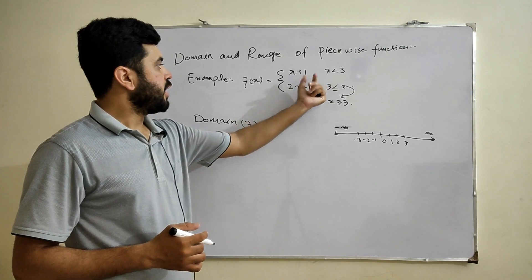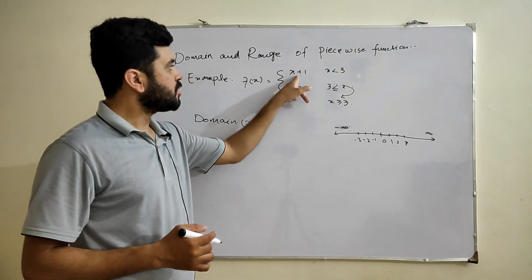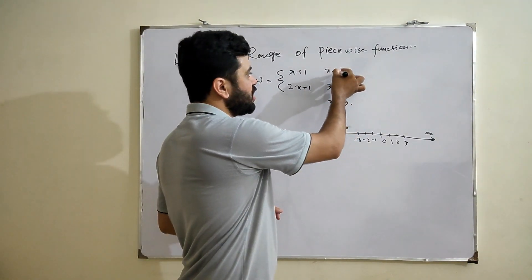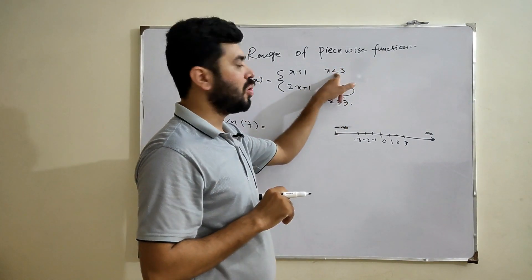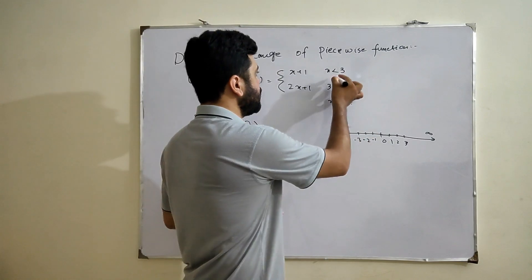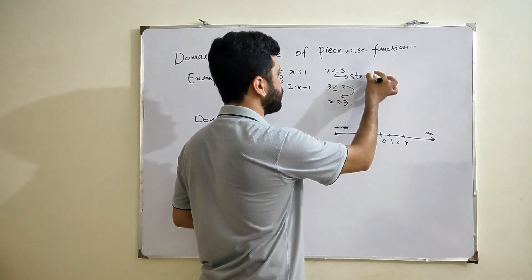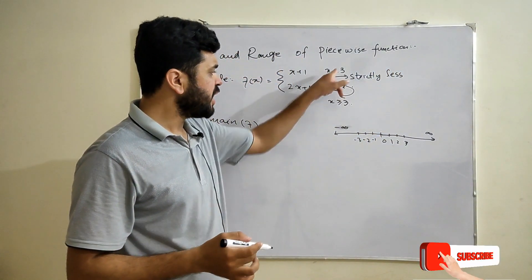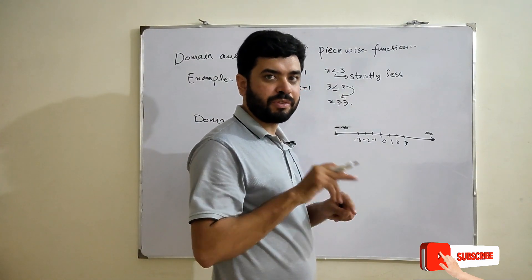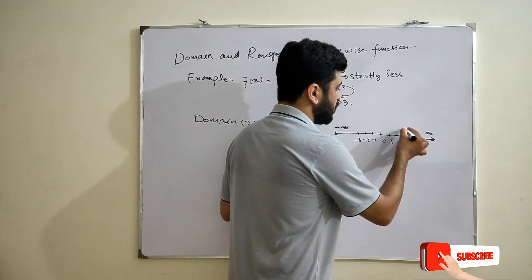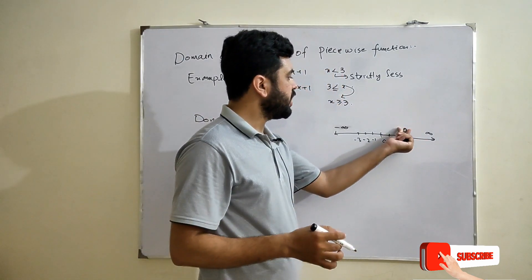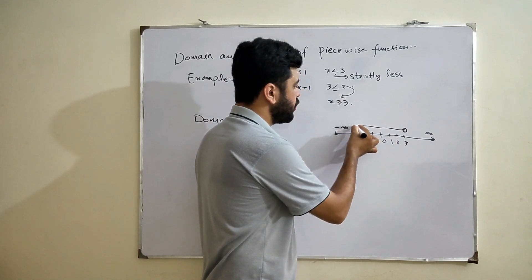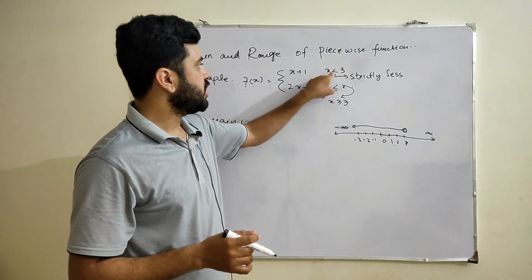For the first part, x plus 1, the condition is x less than 3. This is strictly less, meaning there is no equality involved. Strictly less means we will not include 3, so we use an open interval — 3 will not be included.